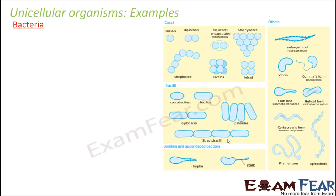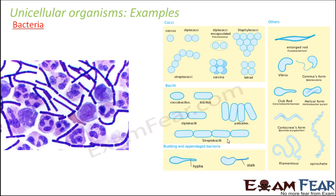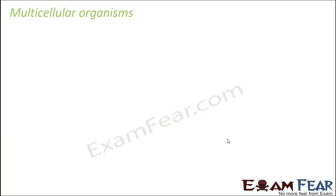The most important unicellular organisms would be bacteria. They come in a variety of shapes and sizes and are considered amongst the first life forms on earth. It is said that all other life forms evolved from bacteria. You find them in a number of places — they are found in water, soil, and inside the body of plants or animals.